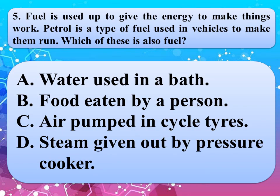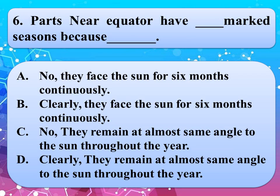Our next question is: Fuel is used up to give the energy to make things work. Petrol is a type of fuel used in vehicles to make them run. Which of these is also fuel? Read the options, give your answer in the comment box. And the correct answer is option B, food eaten by a person.